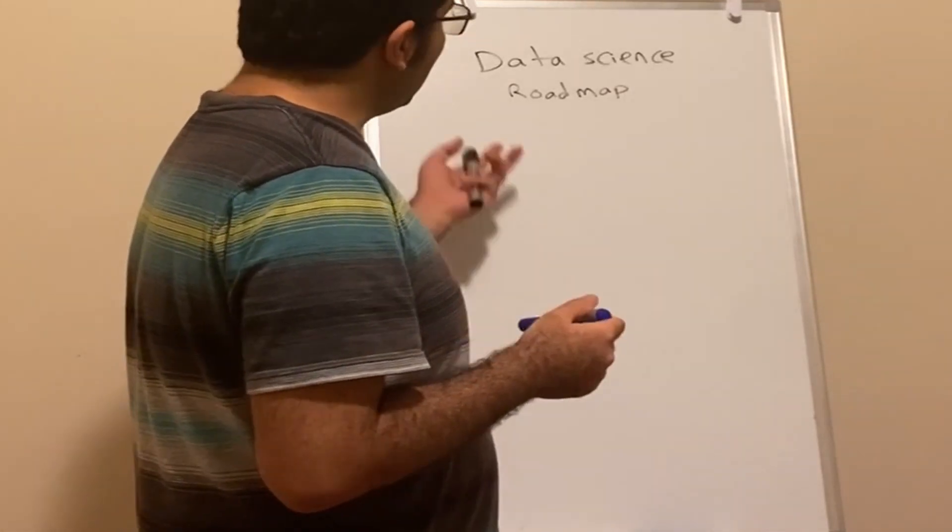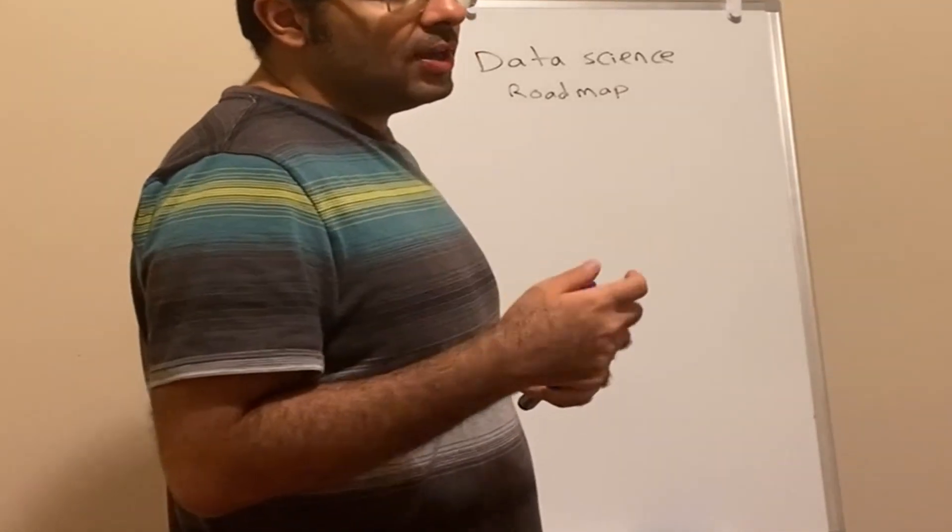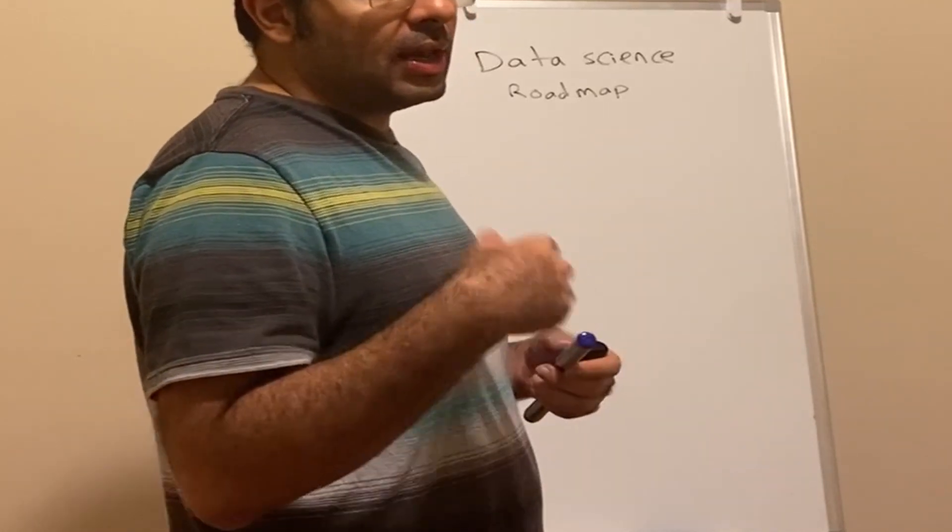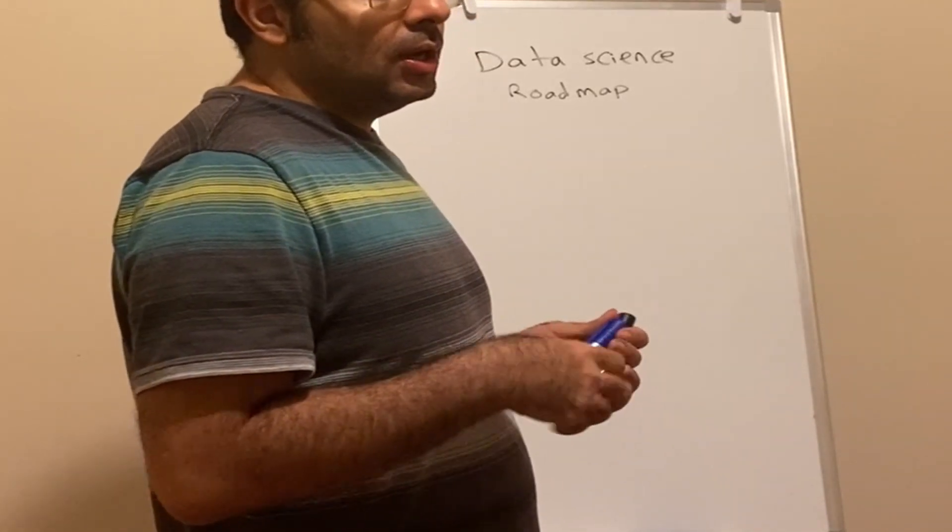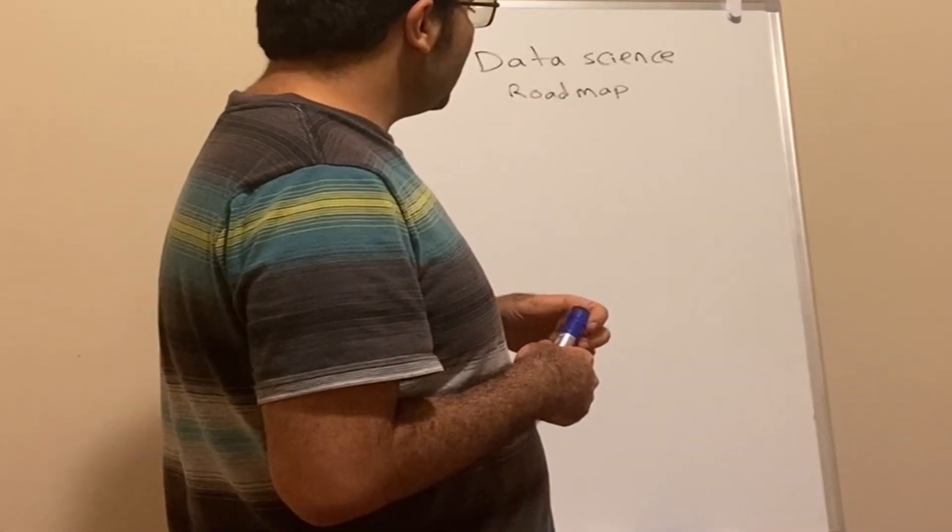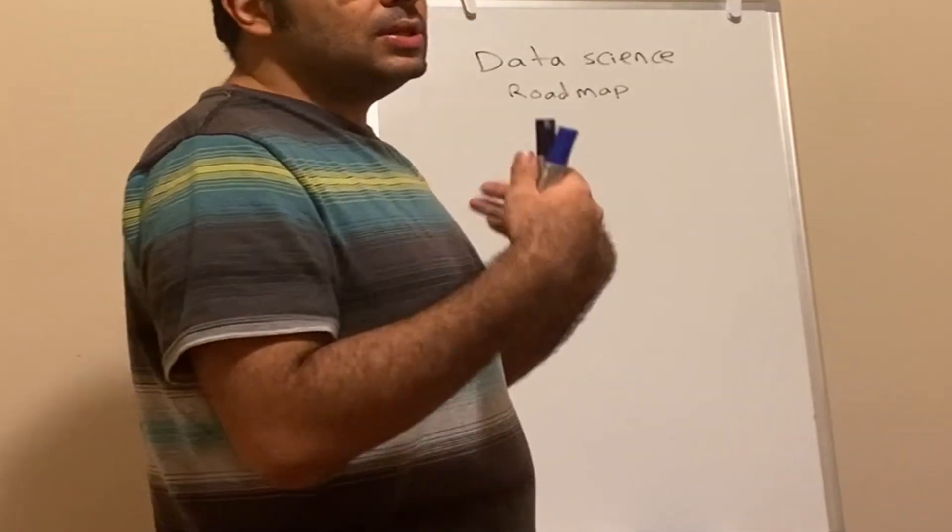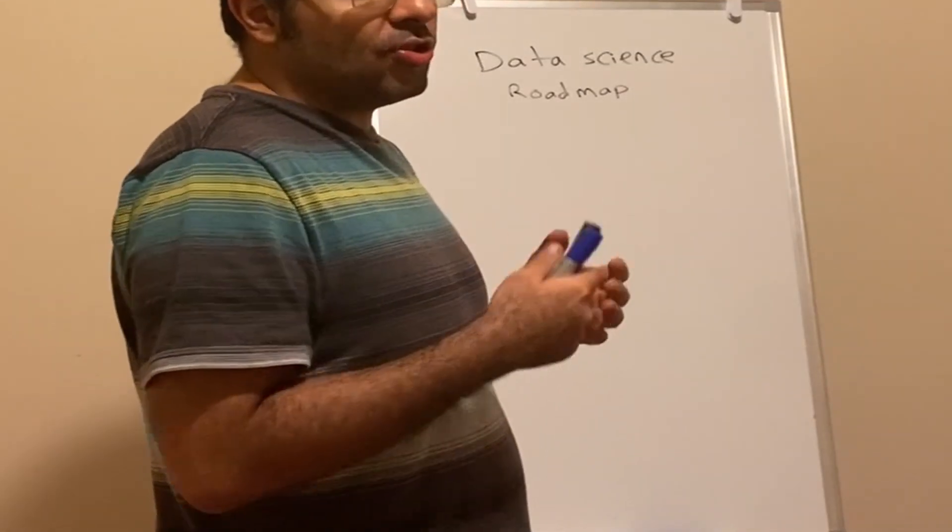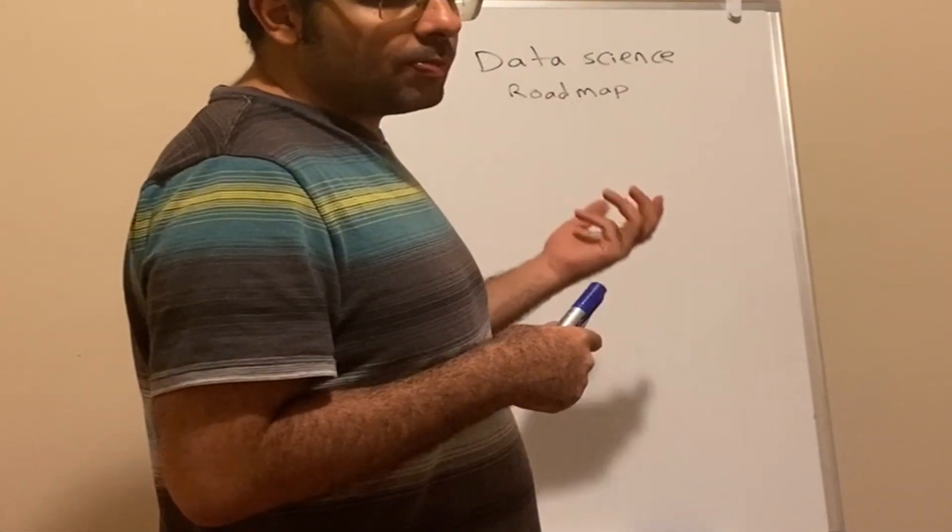I'm going to tell you the definition of roadmap. It's a strategic way in order to be successful in something or to be an expert in an area. Today I want to talk about data science roadmap - the strategic procedures you need to follow to be an expert in data science.